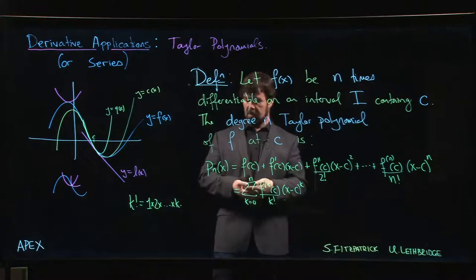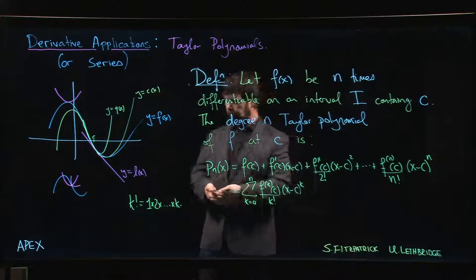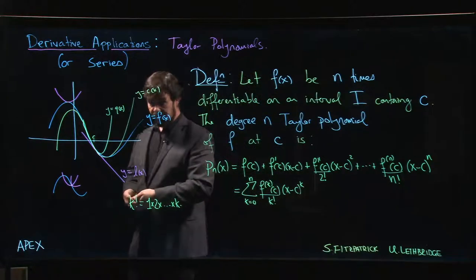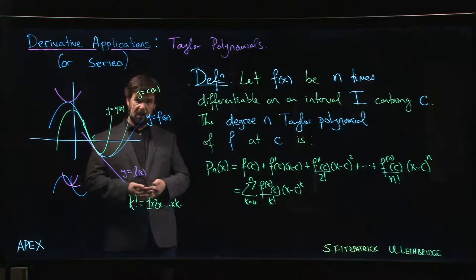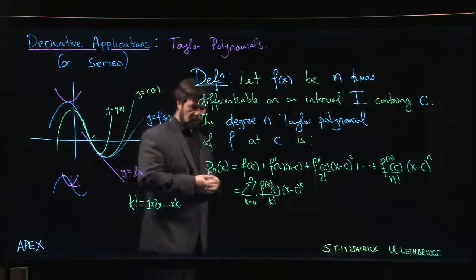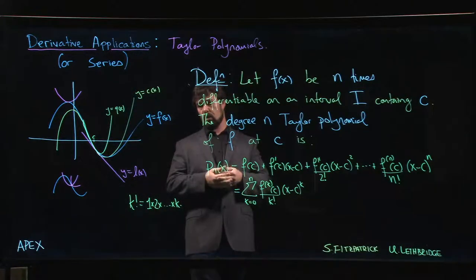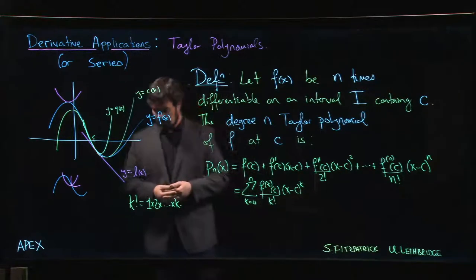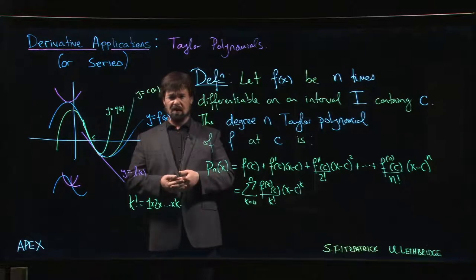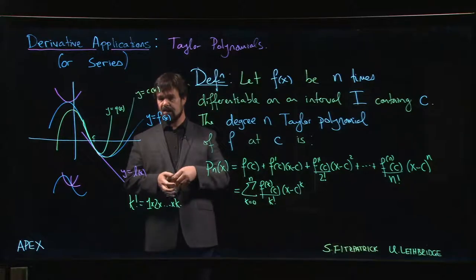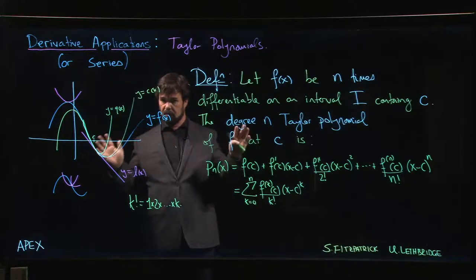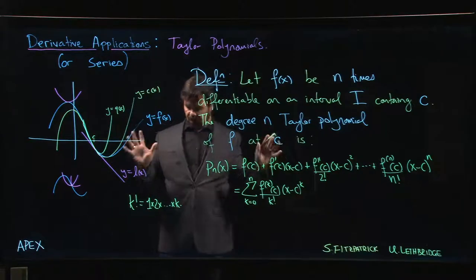We saw that in the last video for the cubic. These factorials grow very fast. 4 factorial is 24, not so big. 5 factorial is 120, 6 factorial is 720, 7 factorial is like 5040, 8 factorial is in the 40 thousands. They grow very big very fast.